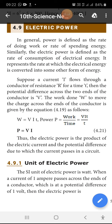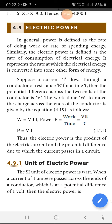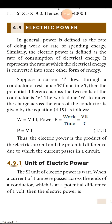In Joule's law of heating we have studied: heat is equal to VIT. So that is the work — using VIT only the work has been done. The work done within a time is called your electrical power. So VIT divided by T — T and T will get cancelled and power is equal to VI.